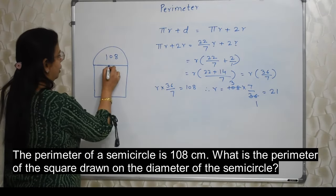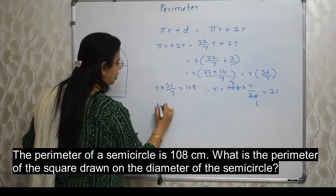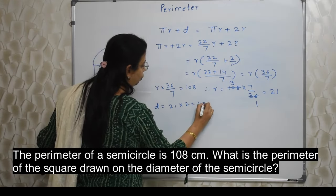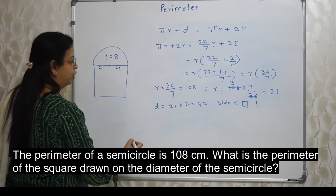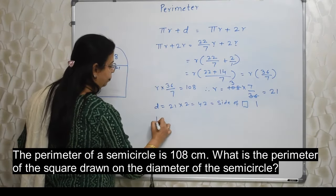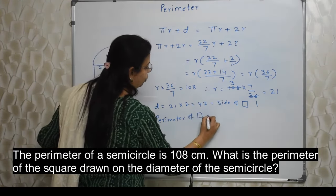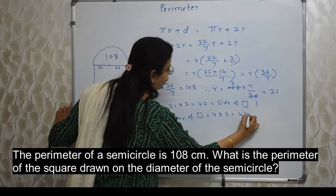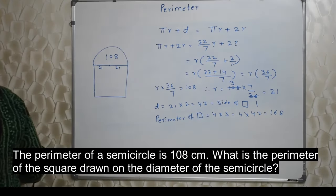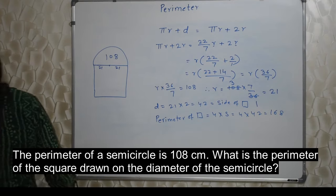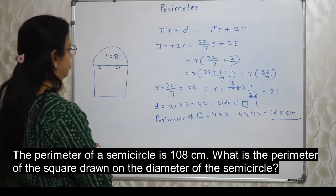Once we know r is 21, diameter will be 21 into 2, that is 42, which is the side of the square. Perimeter of square is 4 into side, that is 4 into 42, that is 168. So 168 is the answer. Everything is in centimeter, so this is 168 centimeter.